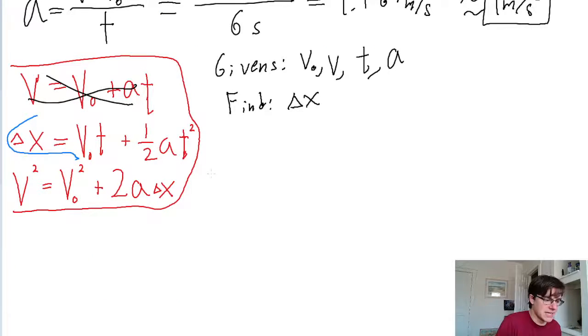So delta x, which is what we want to find, is equal to the initial speed of 14 times the time of 6 seconds